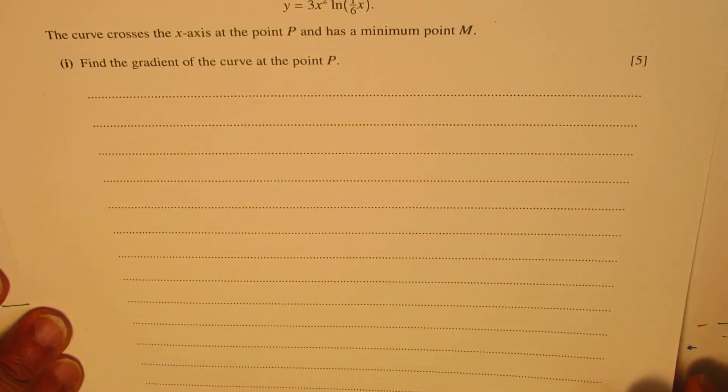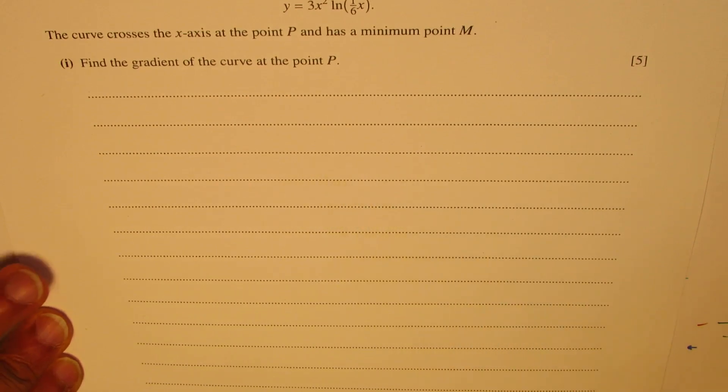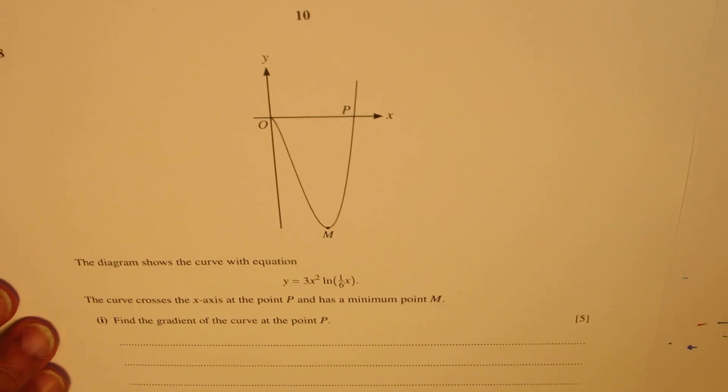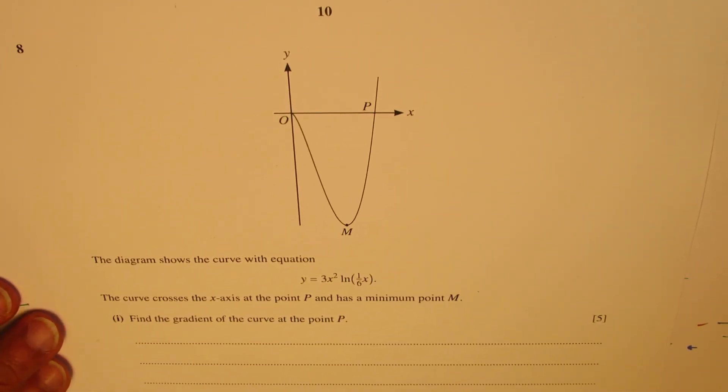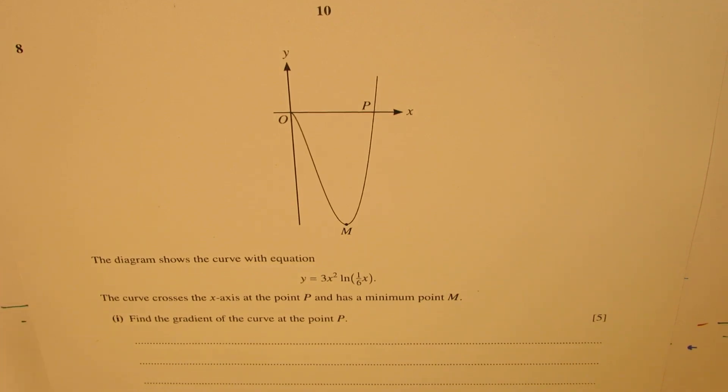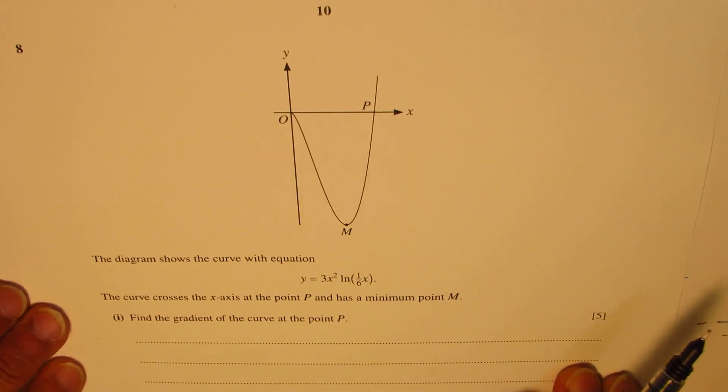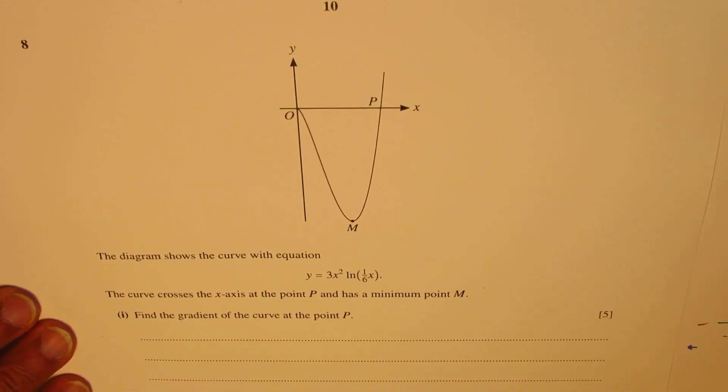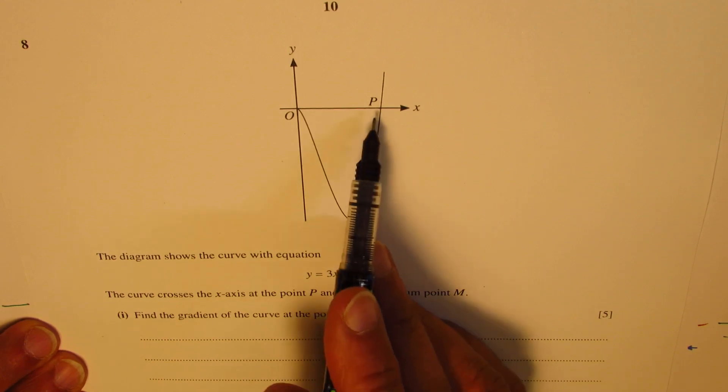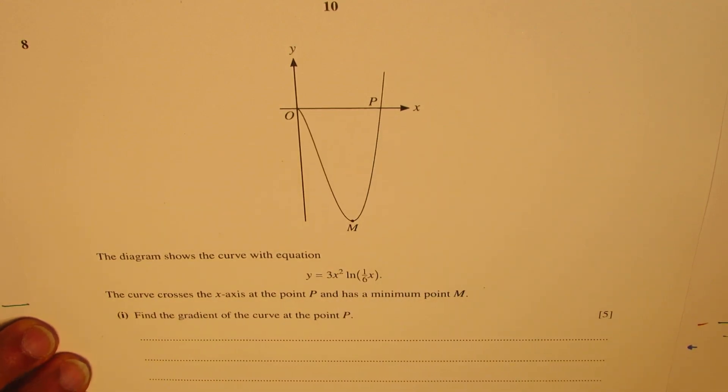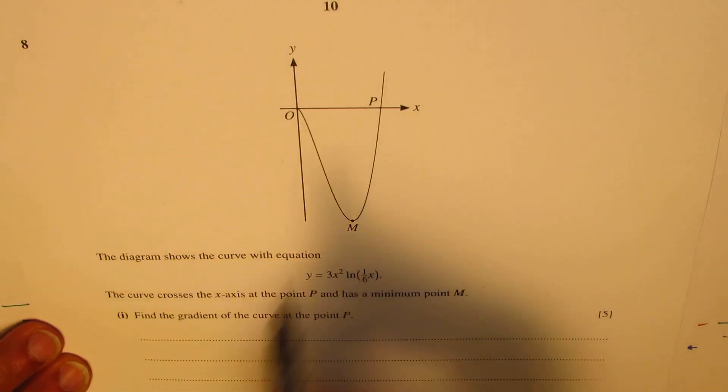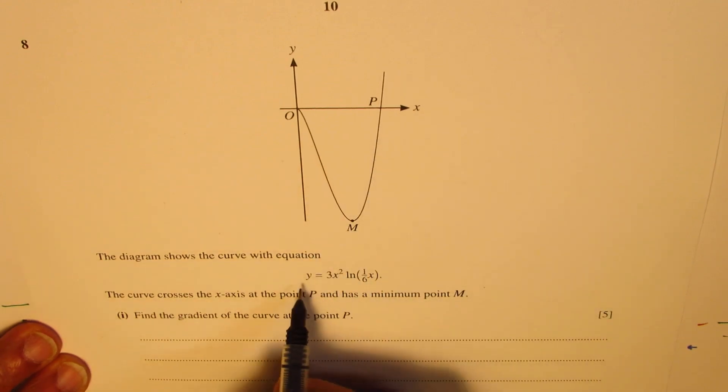Normally you're supposed to write your solution in the space provided. However, in my case, I'm going to give you some hints on how to solve such questions in the space under my camera without moving the paper much. So since we need to find the gradient of the curve at point P, first thing is to find P point itself.